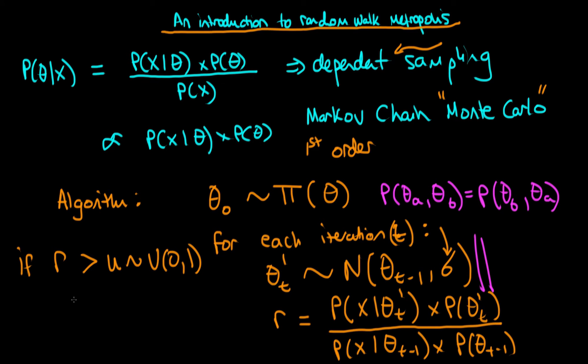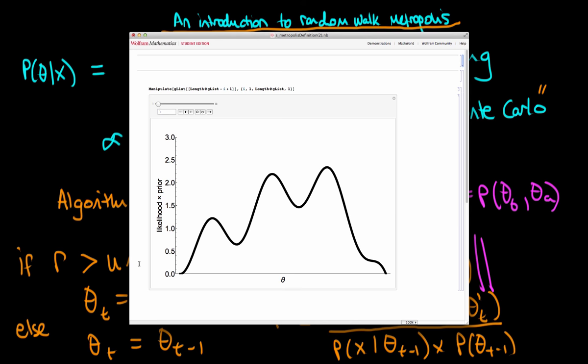If r is greater than the uniform random number, we move to the new location: theta t equals theta t primed. Otherwise, our new location theta t is just our old location — we effectively sample twice from our old location. Now I want to illustrate using an animation created in Mathematica how this algorithm works in practice.